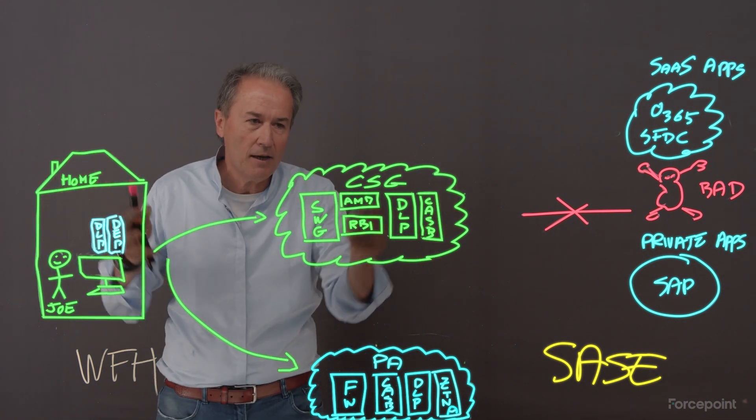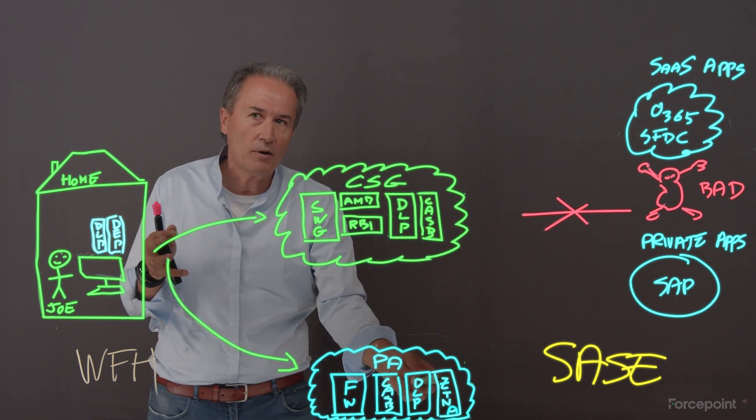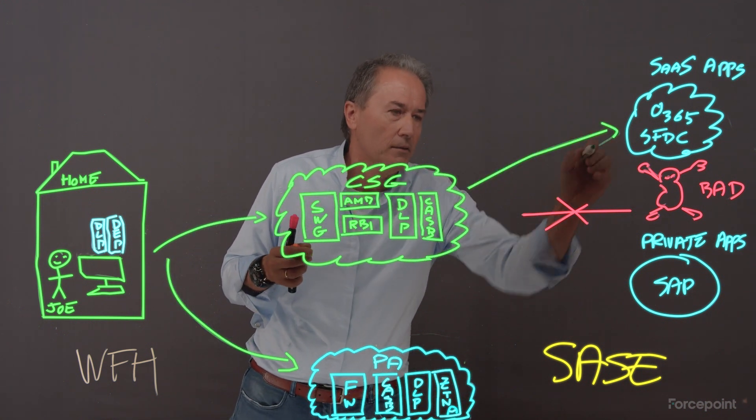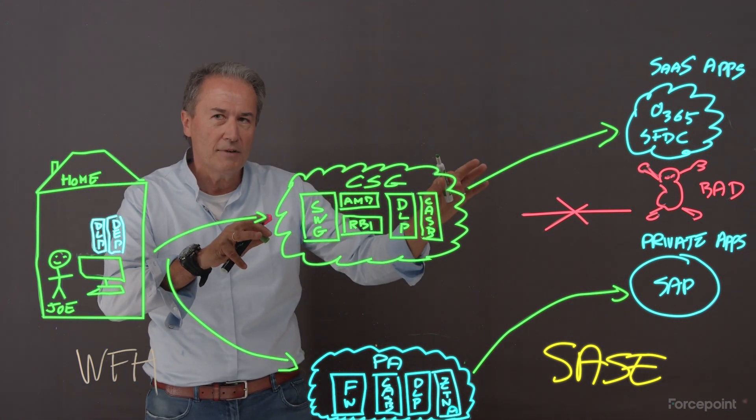For access, the second horsemen, we had the CASB for SASE application and we had the Zero Trust Network access, the private access for private apps. Let's draw it right there. That's horsemen number two, access.